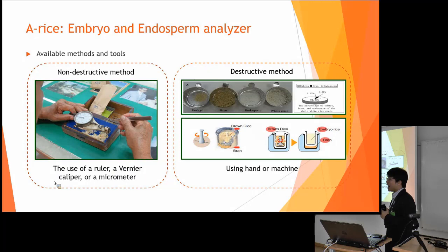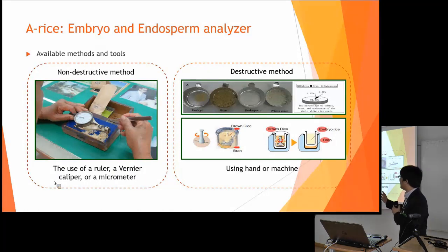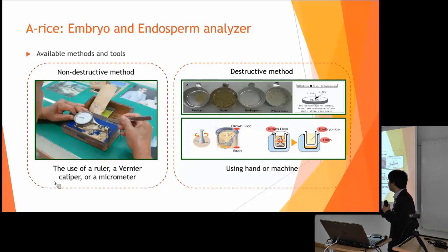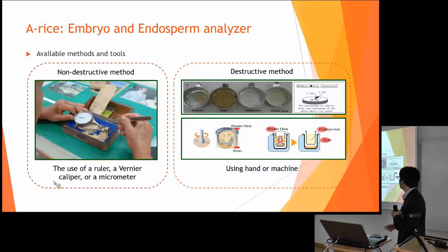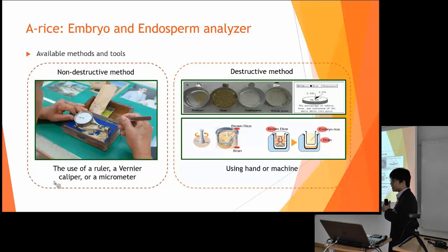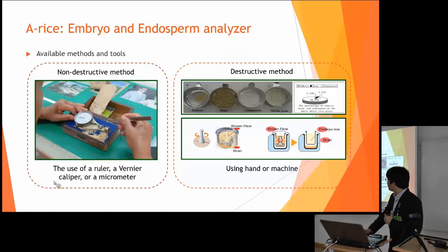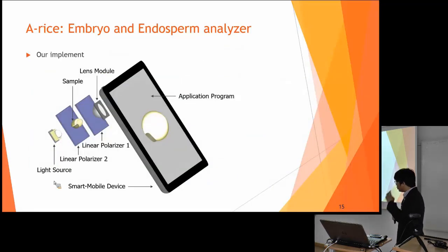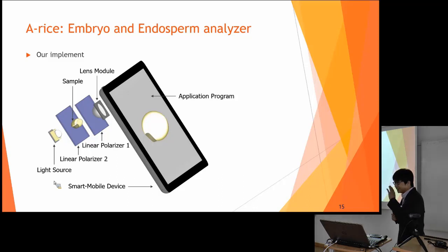Before we had this device, in Thailand we used methods like this. For the non-destructive method, we just used a ruler or caliper to measure the size of the embryo by hand. But for the destructive method, sometimes we had to mold the rice grain or use a machine to mold it and measure the content of the endosperm. We wanted to reduce the time needed to measure the endosperm size.